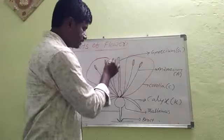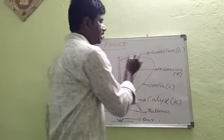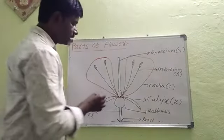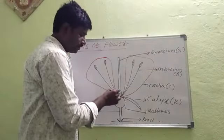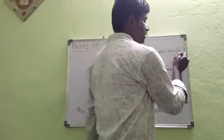Gynoecium is the innermost floral part. It is also called the female sexual reproductive part. It contains ovules in its ovary. The symbol of gynoecium is G.